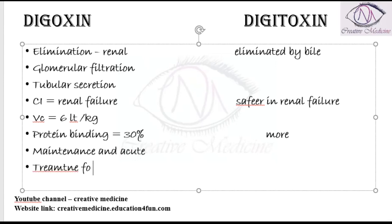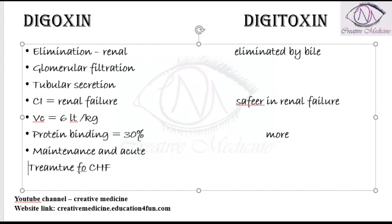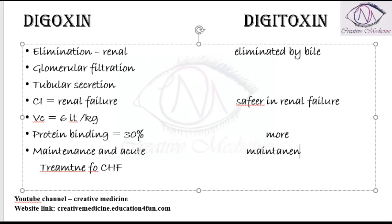Digoxin is used for both the maintenance and acute treatment of congestive heart failure, whereas digitoxin is used mainly for the maintenance of congestive heart failure only.